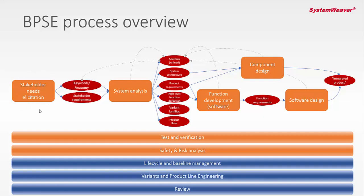If we start looking at the stakeholder level, this is basically about very fluffy requirements from market departments, customers, customer interviews. It can also be legal departments, legislation from various countries, or standards you need to follow to make sure your product is safe or doesn't contain harmful chemicals. This is the level where you're allowed to be vague in your definitions and can also be inconsistent and incomplete. What this ends up in is a number of stakeholder requirements — things that stakeholders require from the product.